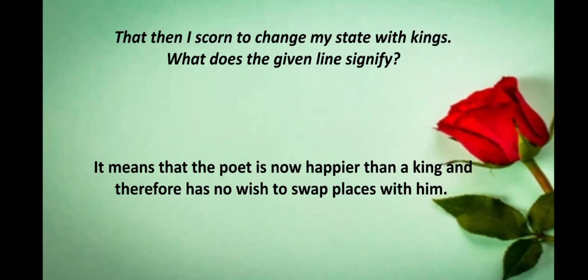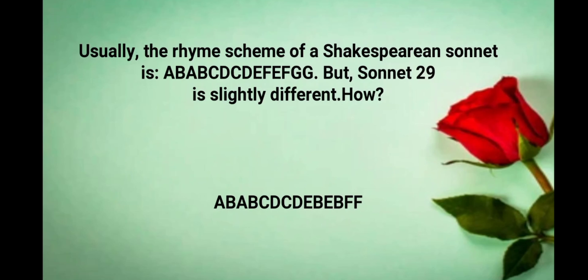Next: 'That then I scorn to change my state with kings' — what does this line signify? Answer: it means the poet is now happier than a king and therefore has no wish to swap places with him. Finally, the usual rhyme scheme of a Shakespearean sonnet is ABAB CDCD EFEF GG, but Sonnet 29 is slightly different: ABAB CDCD EBEB FF, so Shakespeare follows a different rhyming pattern for this sonnet.